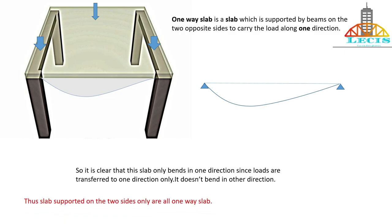We can conclude that slabs supported on two sides are all one-way slabs, because on a one-way slab the loads are transferred in only one direction and there will be bending in only one direction. This side of the slab bends but the other side does not bend. So all slabs supported on only two sides are one-way slabs. Now let's talk about the two-way slab.